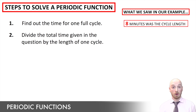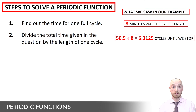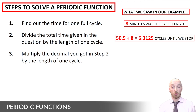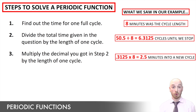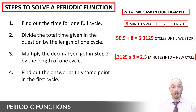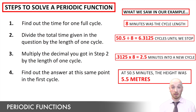Second, find out how long after the start of a new cycle we are stopping our function — it doesn't matter how many full cycles pass. We find this by dividing the total time until the function stops by the length of one cycle. That gives a number with a decimal, and that decimal represents the portion of a new cycle. Multiply just the decimal by the length of a full cycle to get the number of minutes it represents. Then answer the question by finding that exact point in the first cycle on the graph.